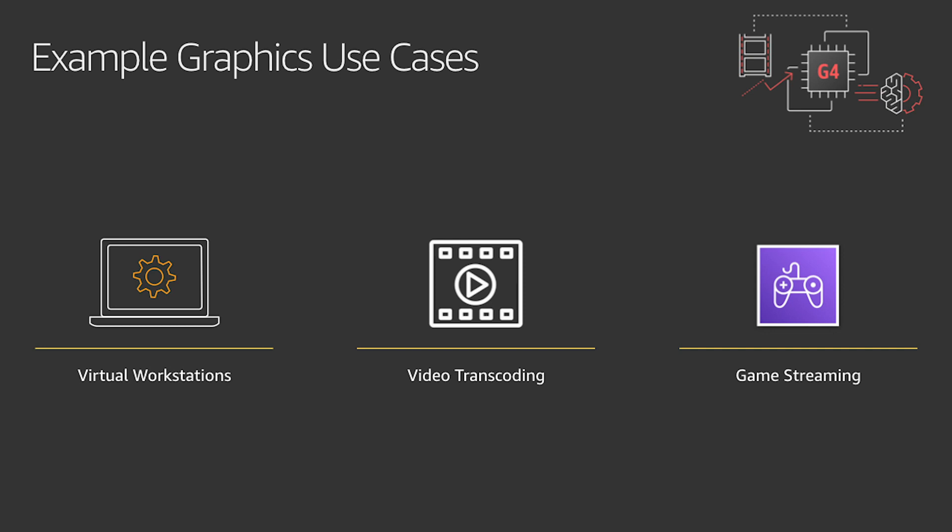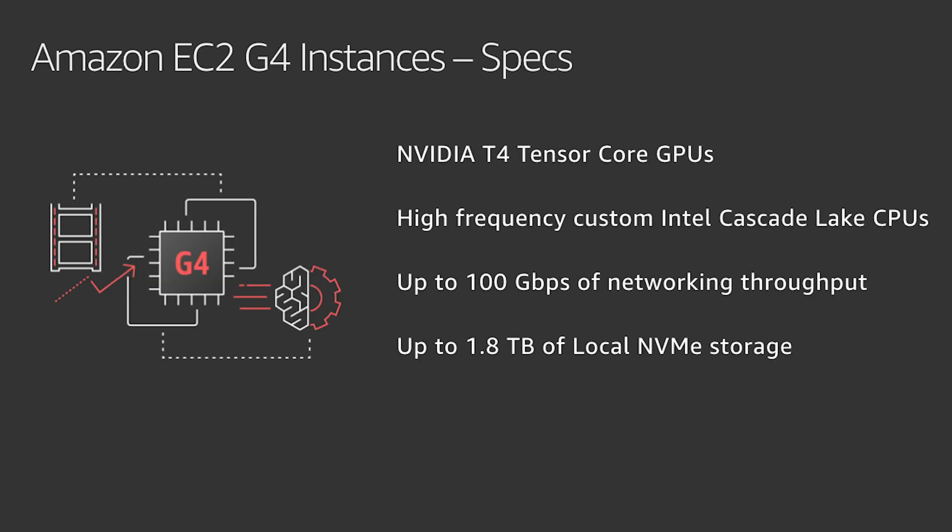With access to NVIDIA Quadro workstations at no additional cost, G4 instances are the most cost-effective cloud platform for virtual workstations. G4 instances provide the latest generation NVIDIA T4 GPUs, AWS custom Intel Cascade Lake CPUs, up to 100 gigabits per second of networking throughput, and up to 1.8 terabytes of local NVMe storage.